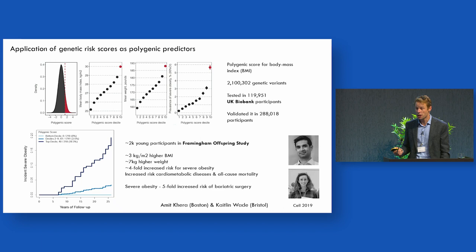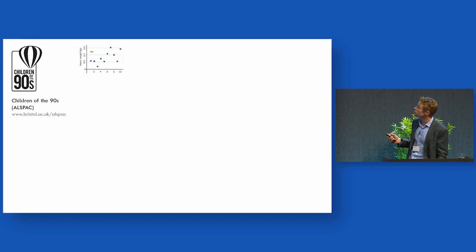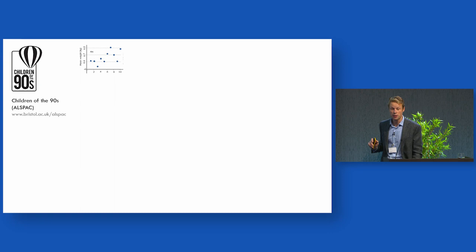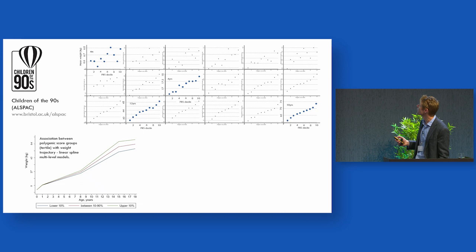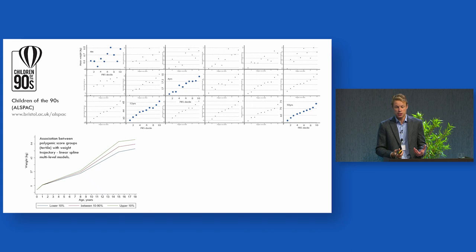You can go further. In longitudinal life course data, you can look backwards and ask what happens over the life course. In the ALSPAC birth cohort in Bristol, you can chart that. This plot shows the relationship between that polygenic score and mean weight in individuals who are four months old — almost flat. By four years old there's a more linear relationship. Let's go further through 12 years and out to 18 years — we now see relatively modest but very clear differences in kilograms between polygenic risk contributions.